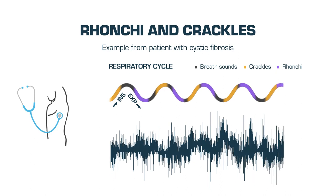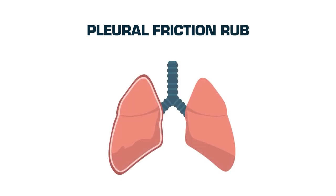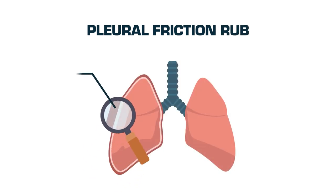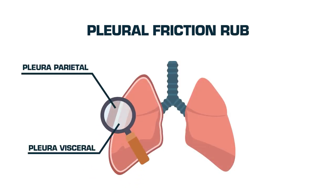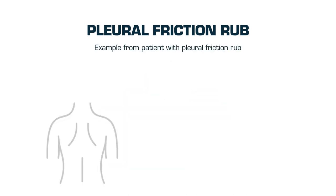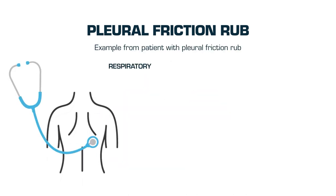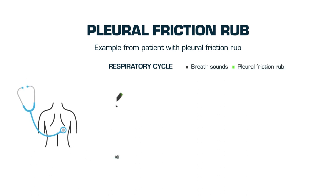Finally, we can find an adventitious breath sound called pleural friction rub. This is due to friction between parietal and visceral pleura. It is produced as a consequence of an alteration of the pleura, such as an inflammatory or neoplastic process. It can be heard towards the end of inspiration and at the beginning of expiration.